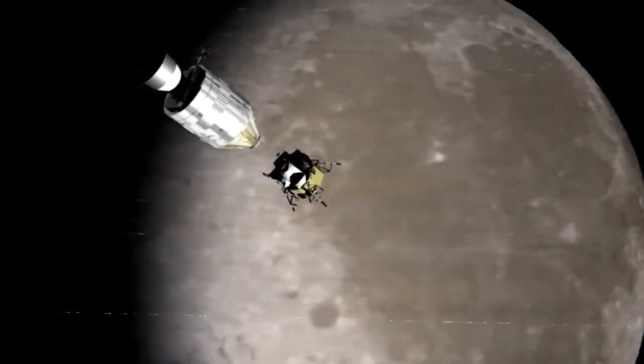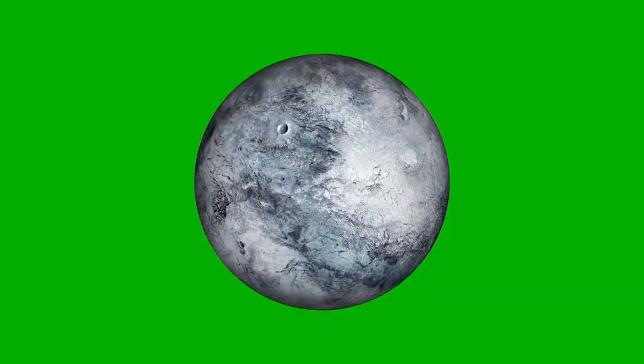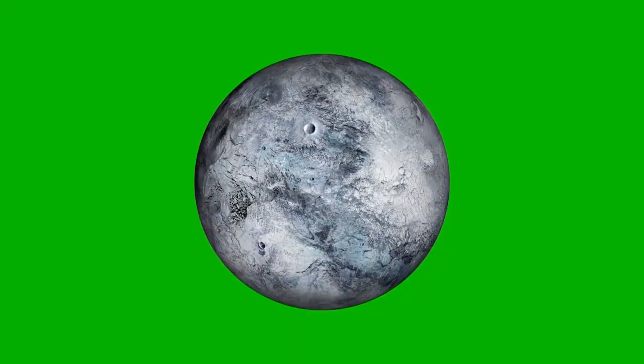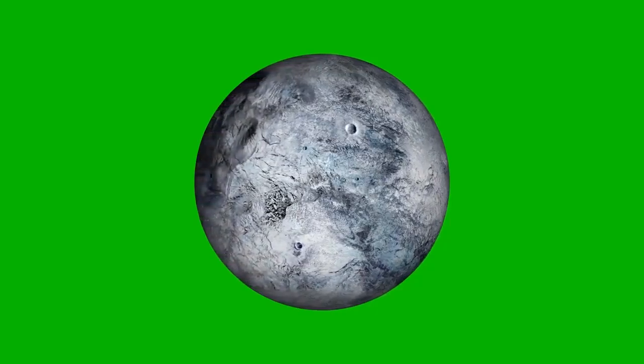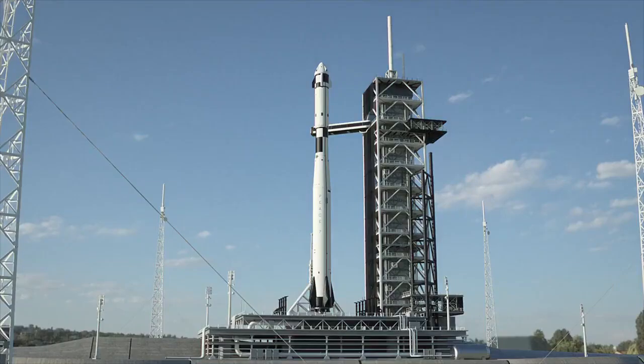The updated analysis sheds light on several key mysteries. Scientists previously believed the lack of plasma indicated that the moons were geologically inactive. The new understanding suggests that this conclusion was premature. Uranus' five largest moons could, in fact, be geologically active, possibly harboring subsurface oceans or other dynamic features.